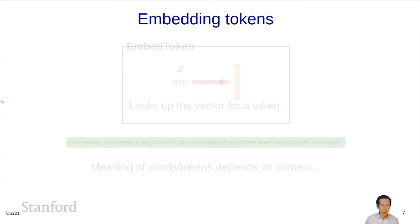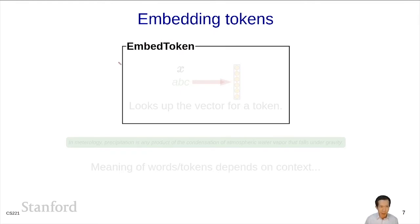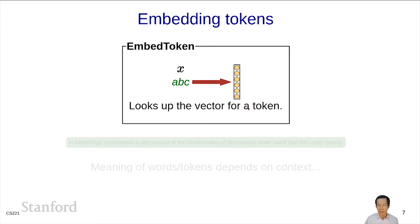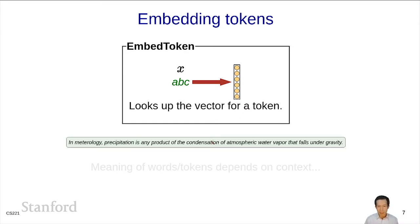Words are discrete objects and neural networks speak vectors. Whenever you're doing NLP with neural nets, you first have to embed words or more generally tokens. We define an embed token function that takes a word or token x and maps it to a vector. All this function does is look up a vector in a dictionary that has a static set of vectors associated with particular tokens. If you have a sequence of words, you can embed each word into a vector to get a sequence of vectors.